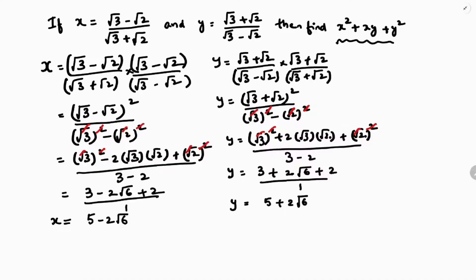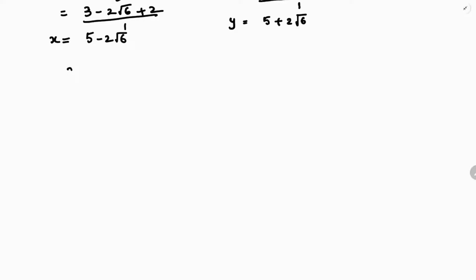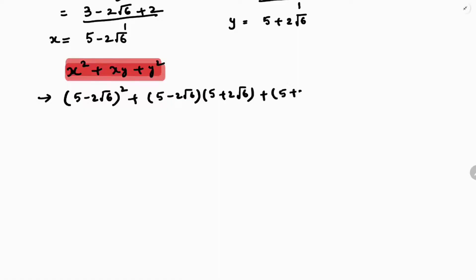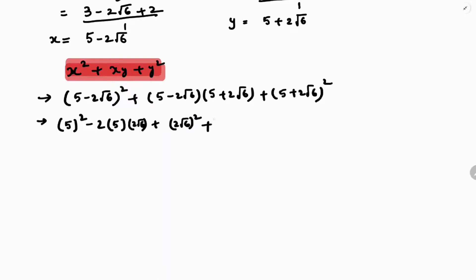Now we need to find x square plus xy plus y square. Substituting the values: x square is (5 minus 2√6) whole square, xy is (5 minus 2√6)(5 plus 2√6), and y square is (5 plus 2√6) whole square. The middle term xy is clearly in the form (a minus b)(a plus b), which equals a square minus b square, giving 25 minus 24 equals 1.